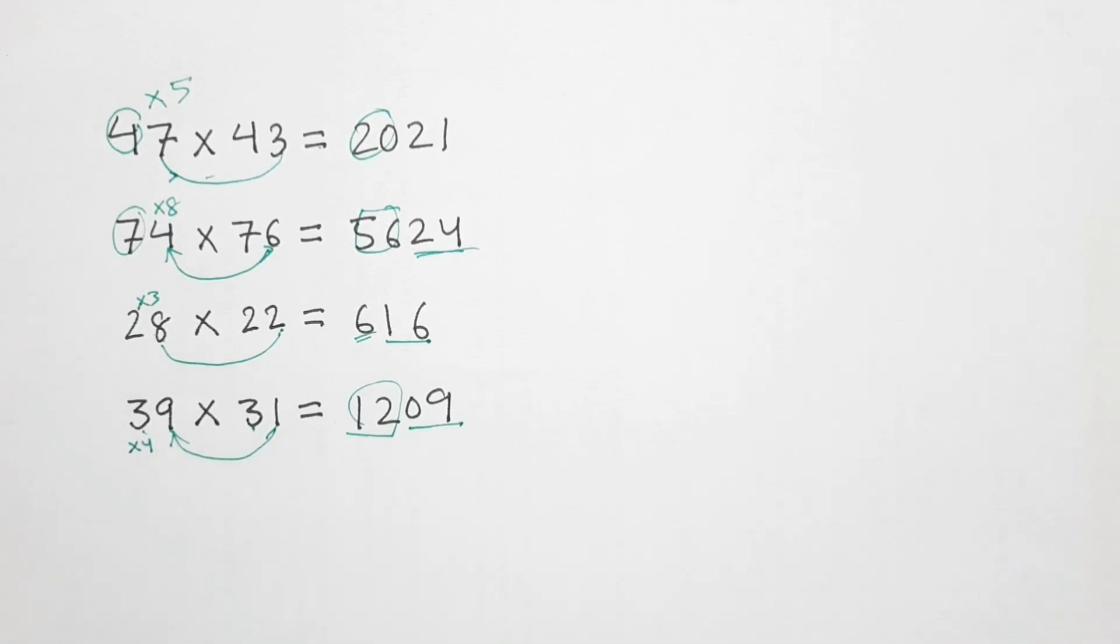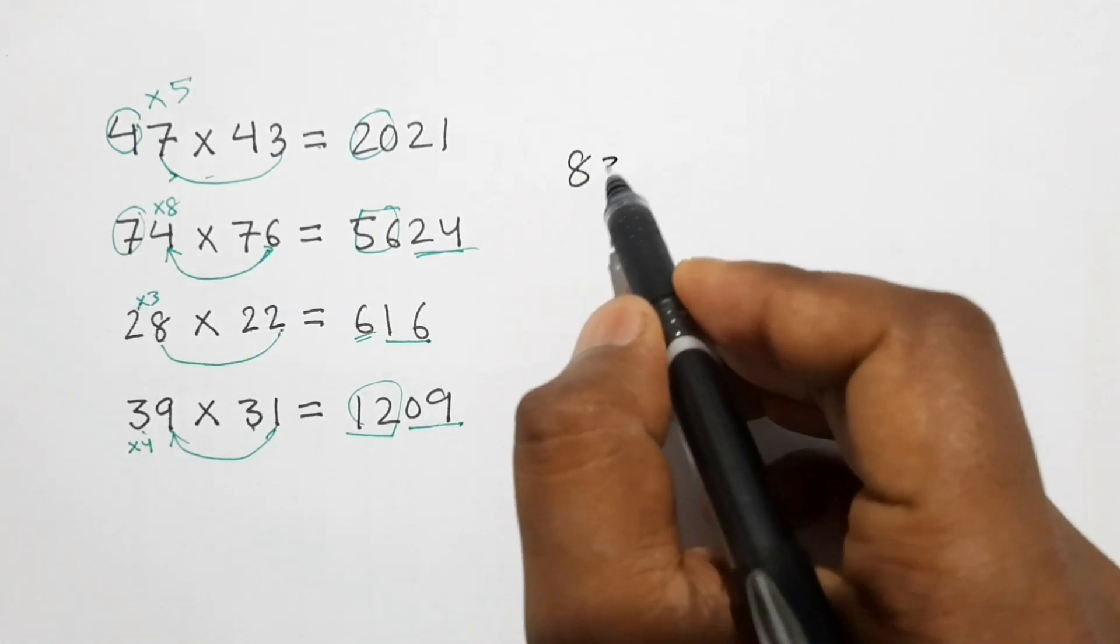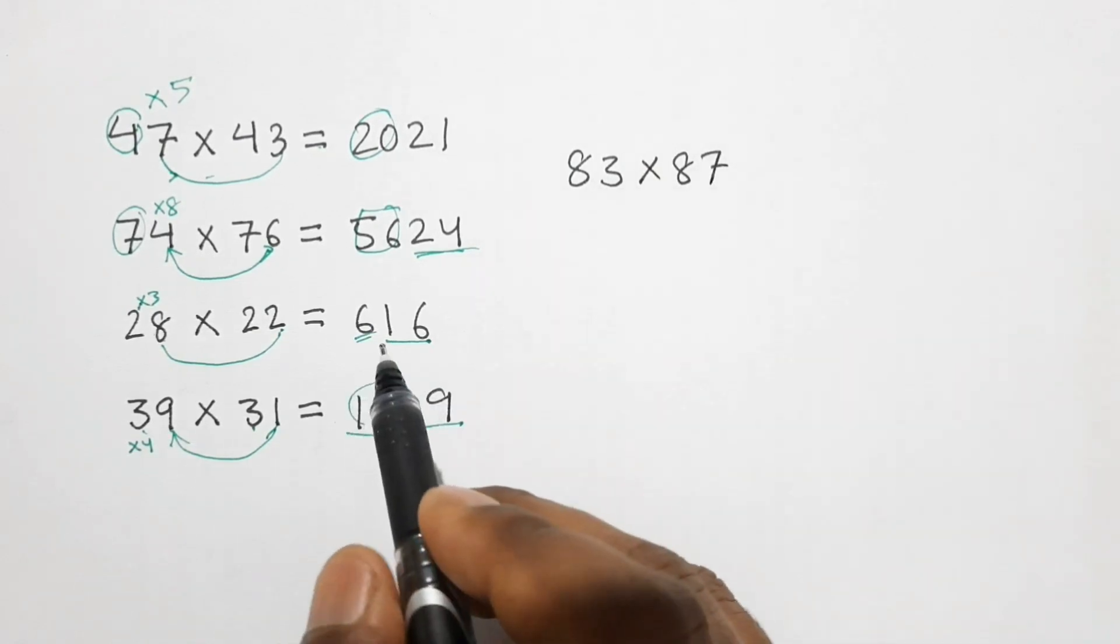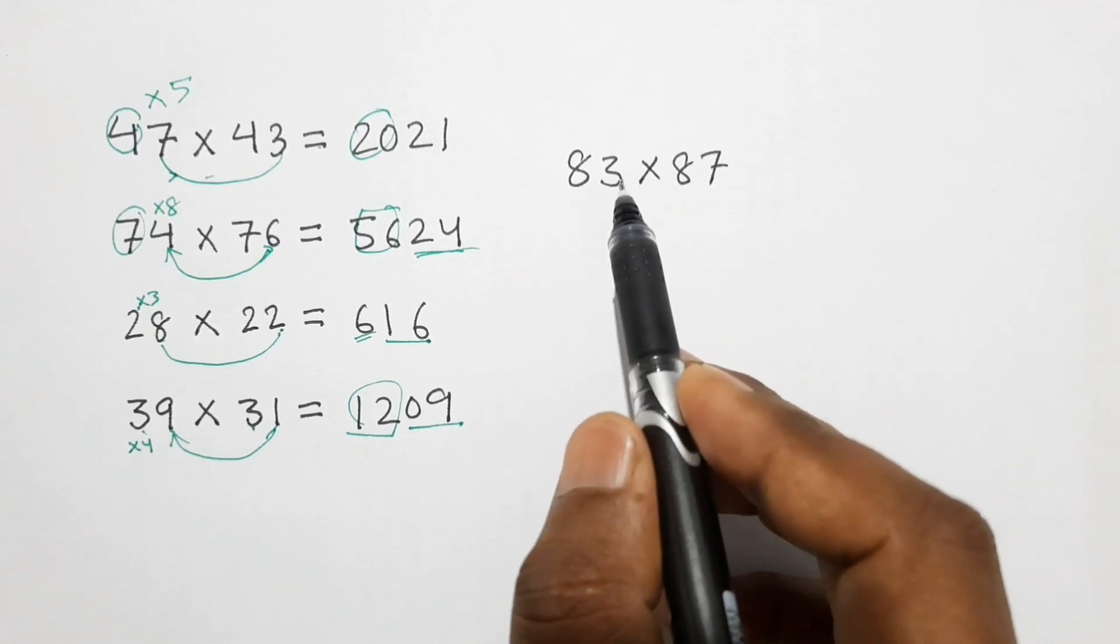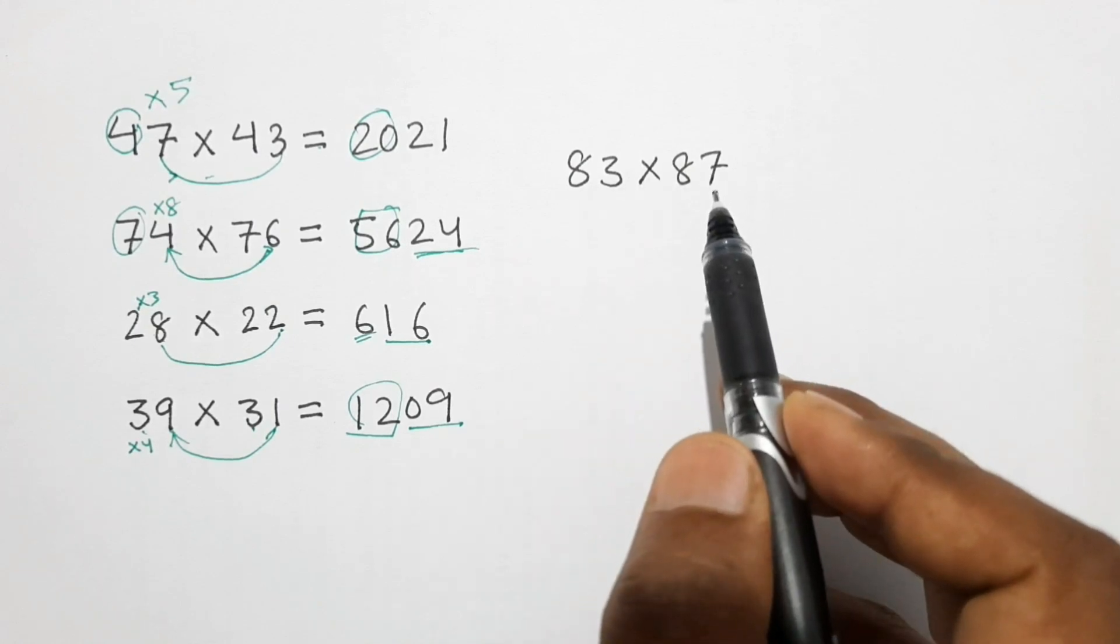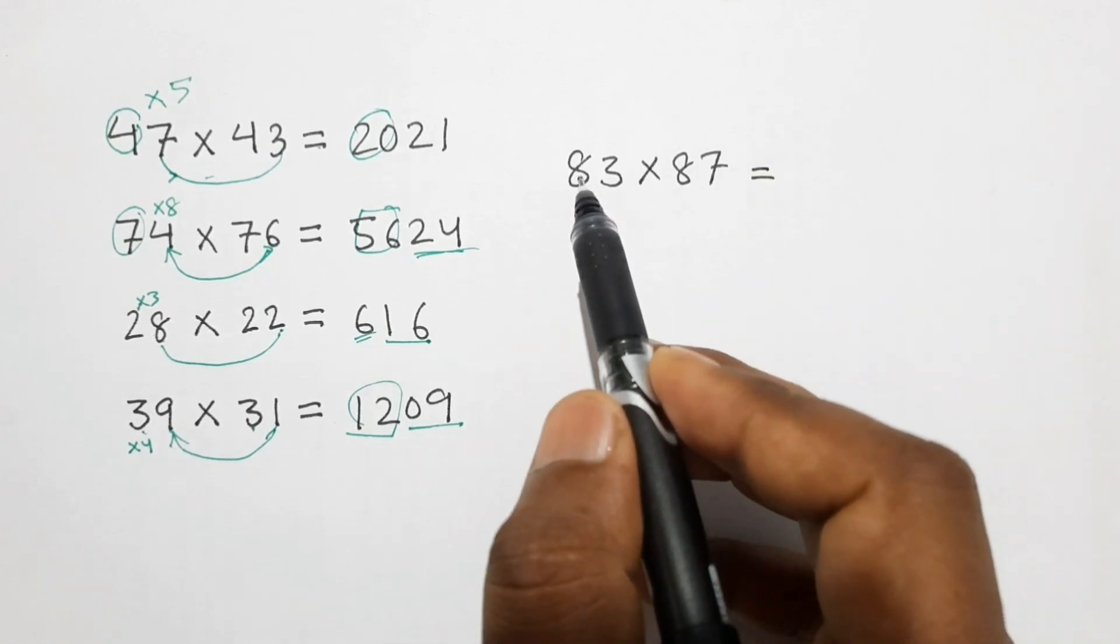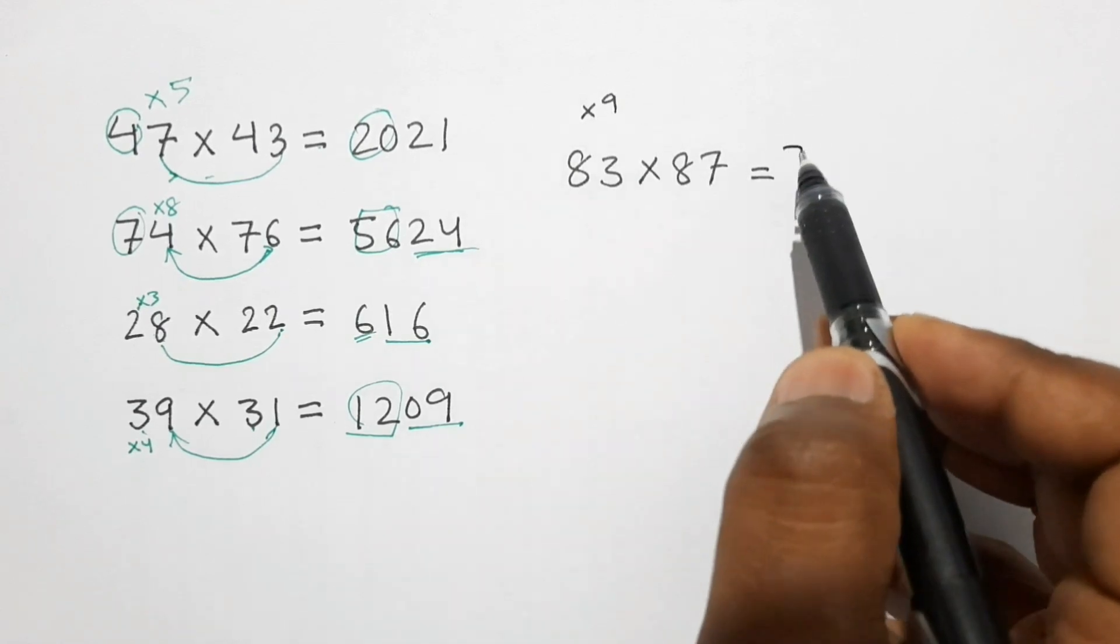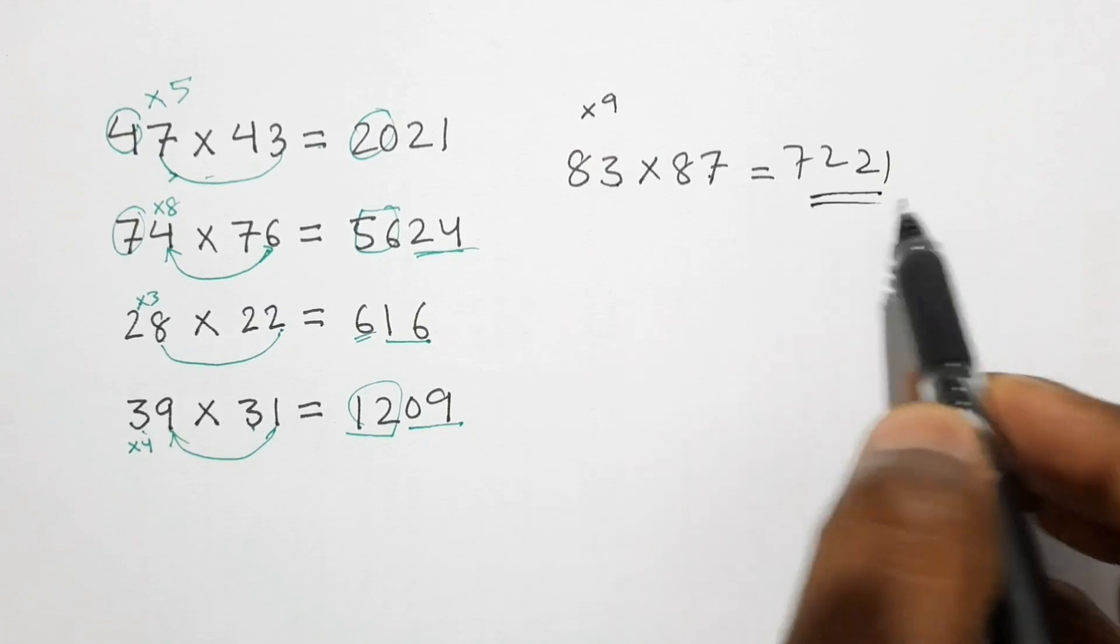So let's see a few more examples. Let's take any number, that is 83 and 87. I am taking the same kind of number, tens digits same and sum of units digits, that is 3 plus 7, is 10. So in this type of multiplication first we do 8 into one more than 8, which is 9. So 8 times 9 is 72, and 3 times 7 is 21. This is our product.